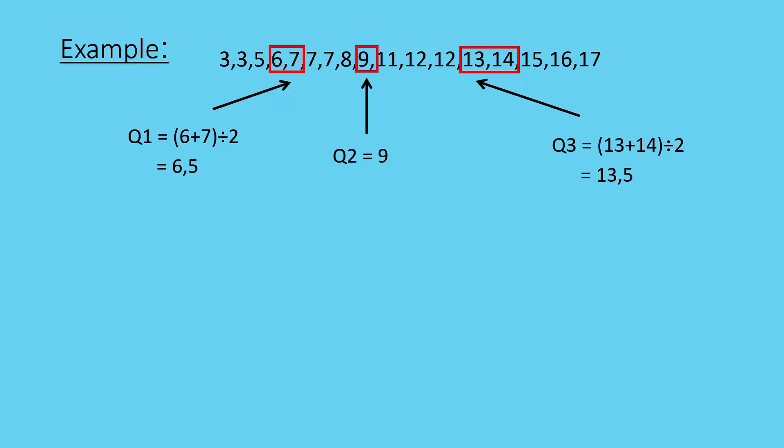So, I've found my quartiles. That tells me that below a value of 6.5 will be 25% of my data. Above 6.5 is 75% of my data.